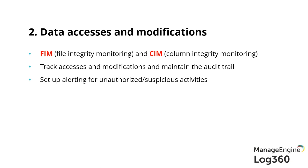System events is one thing. Then there's data access and modifications. In a data exfiltration, there's going to be a data access and probably a modification, copy, or something similar. And ransomware — it creates multiple file encryptions, which is effectively a change in extension. If 100 modifications happen within a few seconds, you know it's ransomware. The only way to detect that is if you're tracking basic file and folder access and modification activities.